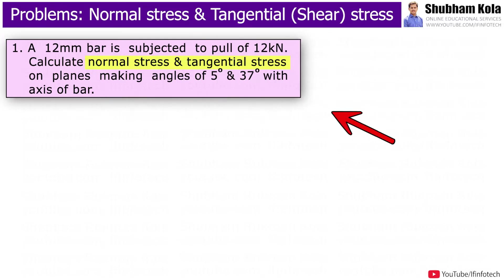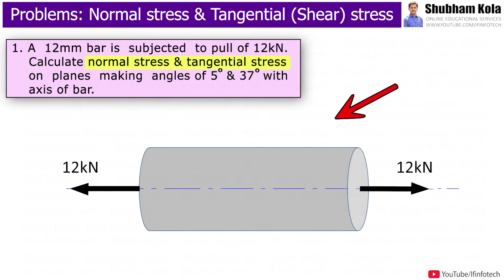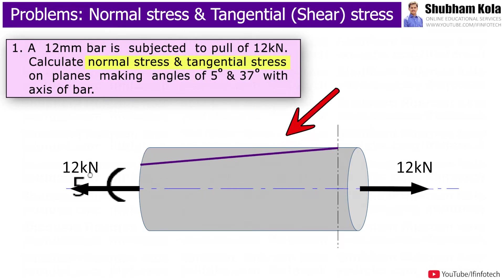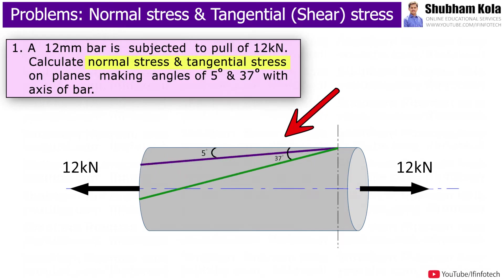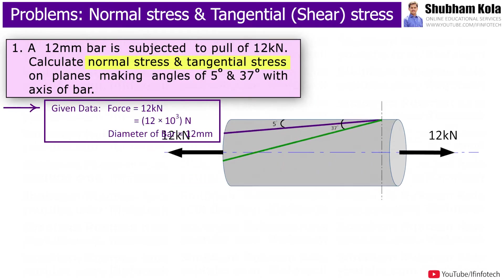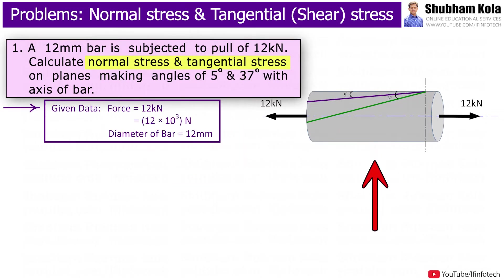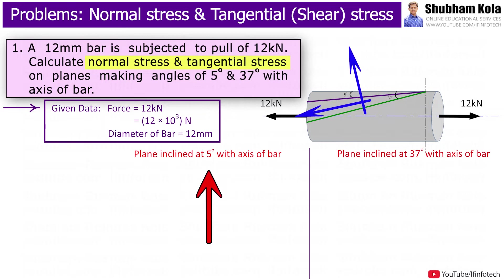Here the statement is: a 12 mm bar is subjected to a pull of 12 kN. Calculate normal stress and tangential stress on a plane making angles of 5° and 37° with the axis of the bar. The bar is pulled horizontally and we have to calculate normal stress and tangential stress, i.e., shear stress, on planes making angles of 5° and 37°.